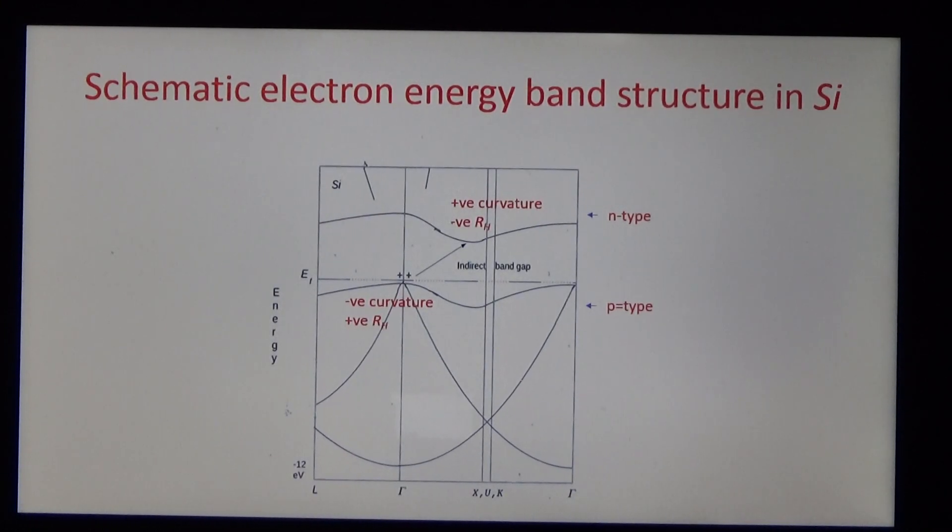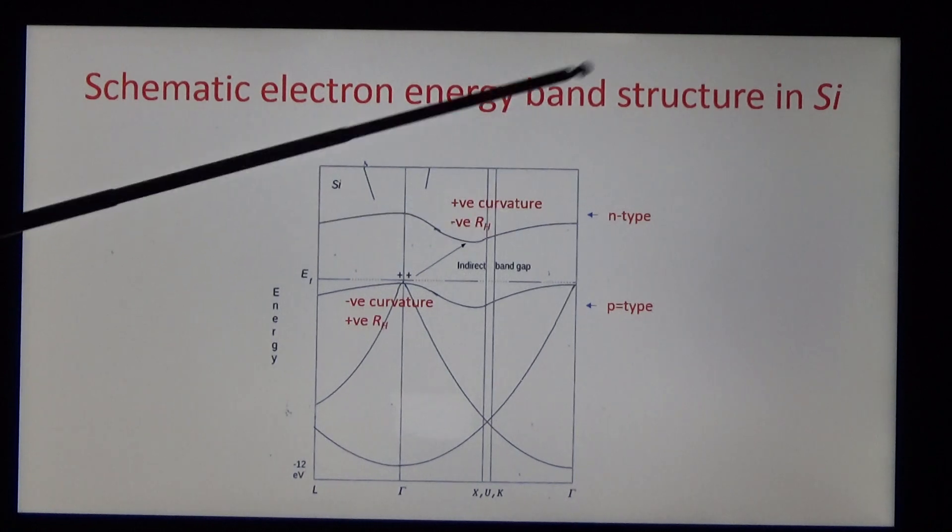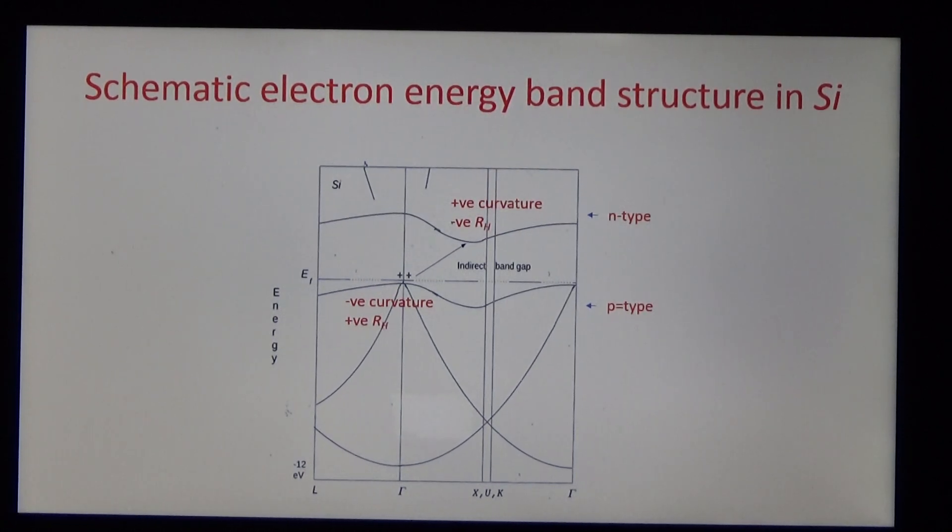Consider, secondly, a typical semiconductor. The valence bands have negative curvature, the conduction bands have positive curvature. In a p-type semiconductor, the Fermi level is close to the valence bands. The itinerant electrons have negative curvature and positive Hall coefficient. By contrast, n-type semiconductors have electrons with positive curvature and negative Hall coefficients, like copper.